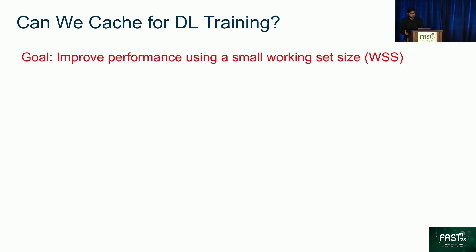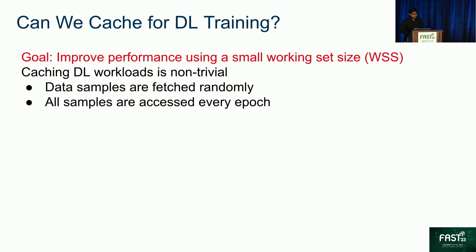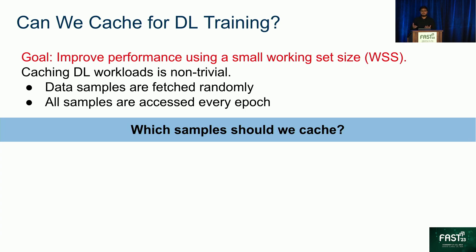So we cannot get rid of the remote storage, but there is another old technique that we could use — caching. In this case, our goal would be to improve the performance using a small working set size. But caching DL workloads is nontrivial, because data samples are fetched randomly, which is not amenable to caching. To make matters worse, all of the samples are accessed every epoch. So which samples should we even cache?